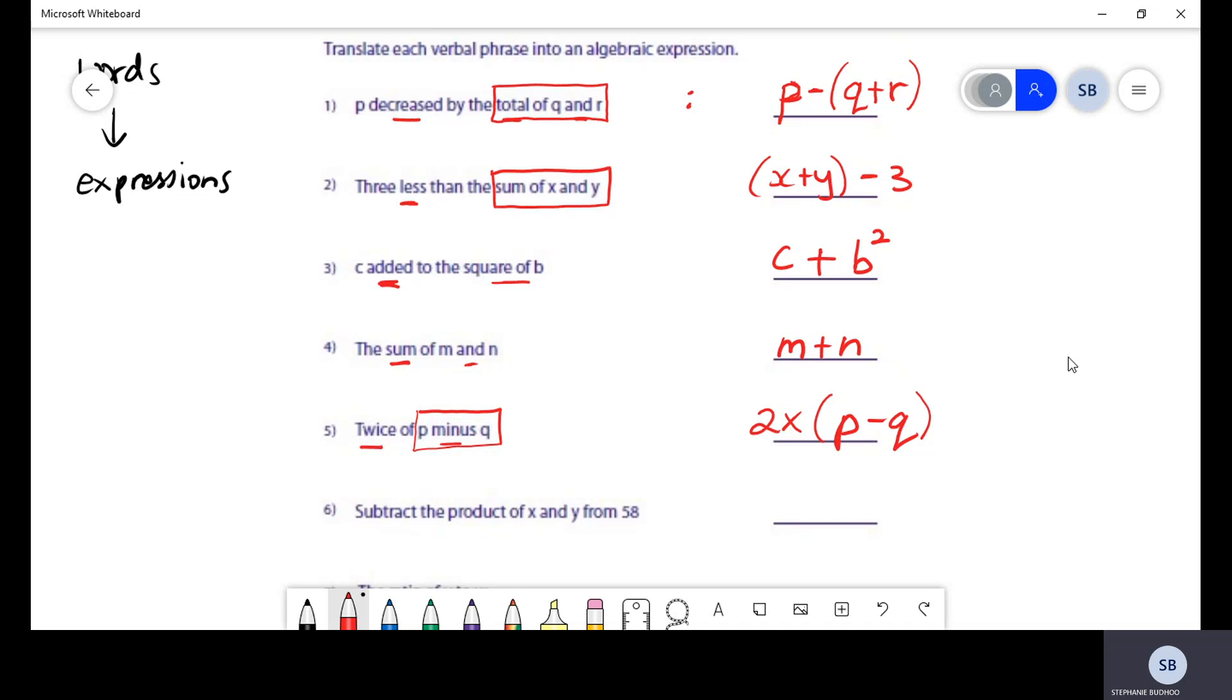And then whatever the result of that is, they're saying to find twice that value. Another way of writing this is to leave out that multiplication sign and you could have gotten this.